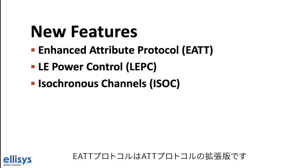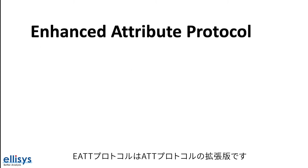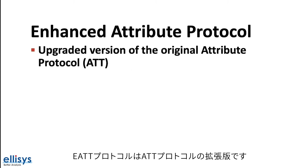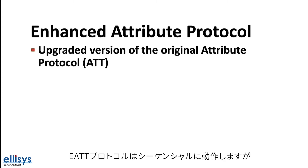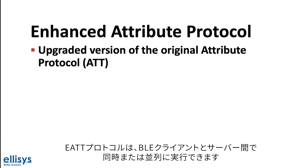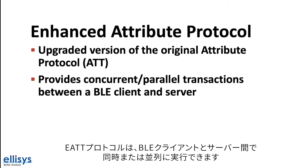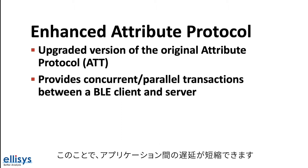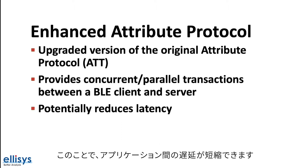The new enhanced attribute protocol is an upgraded version of the original attribute protocol. Whereas the original unenhanced attribute protocol operates in a sequential manner, the enhanced attribute protocol provides a way to perform concurrent or parallel transactions between a BLE client and a server, and potentially reduce the latency of operations in some applications.